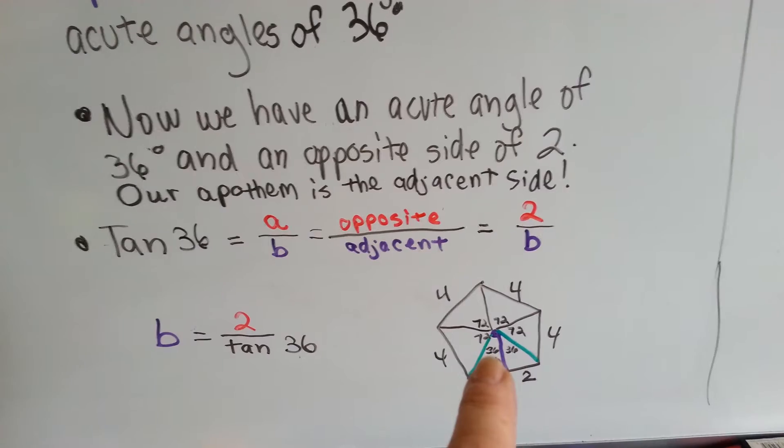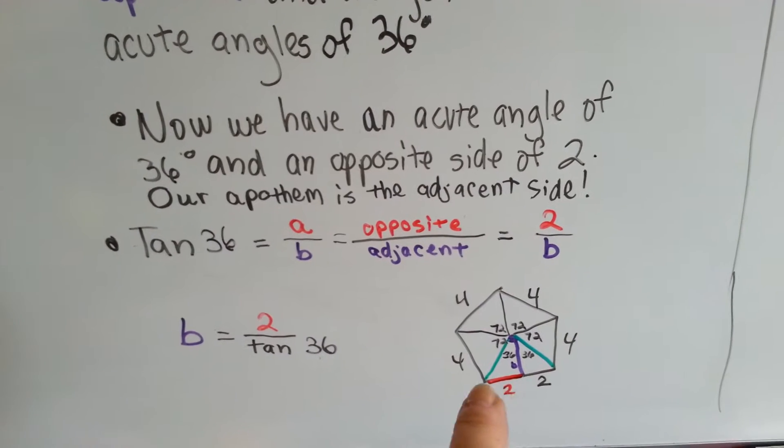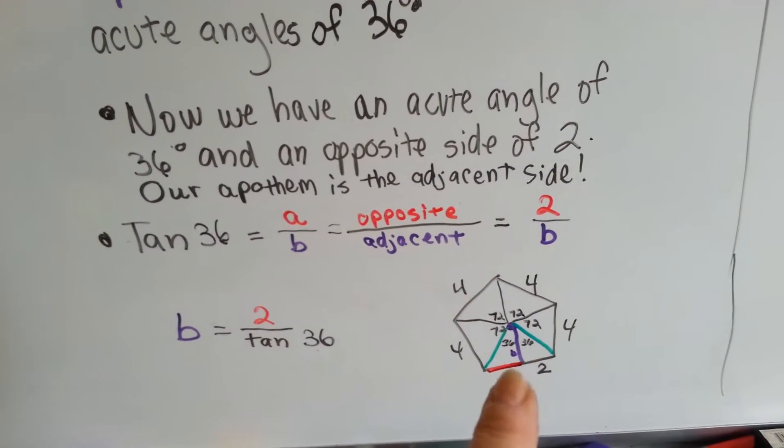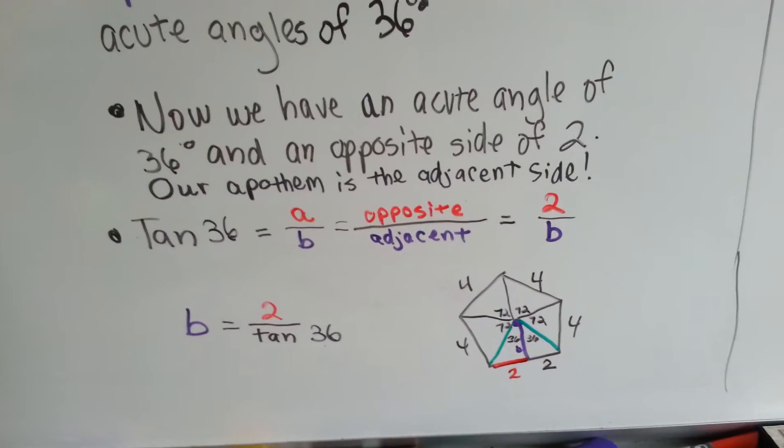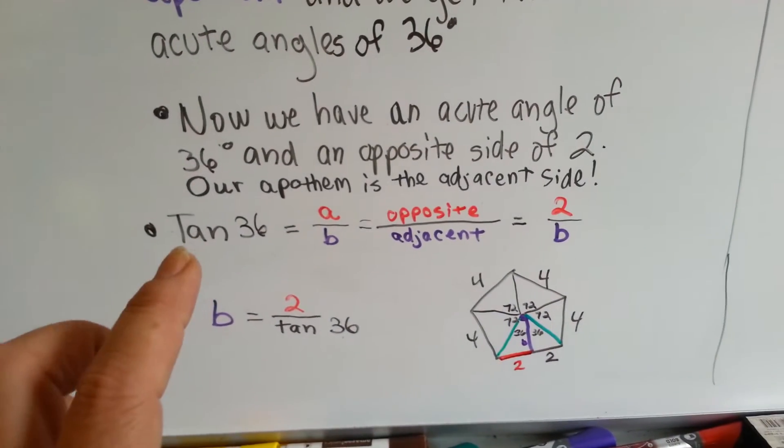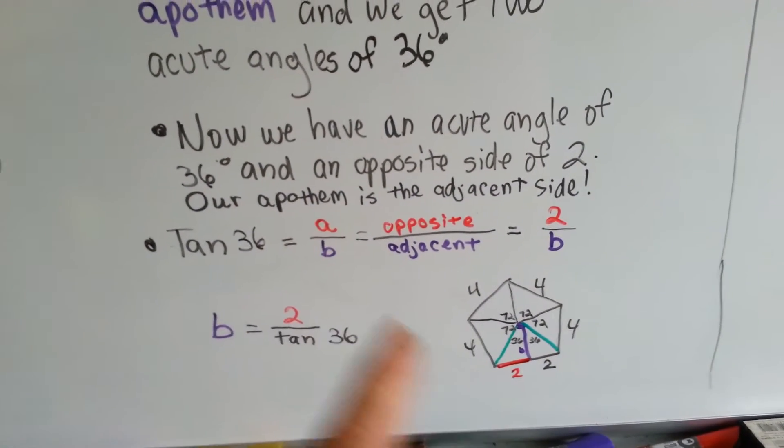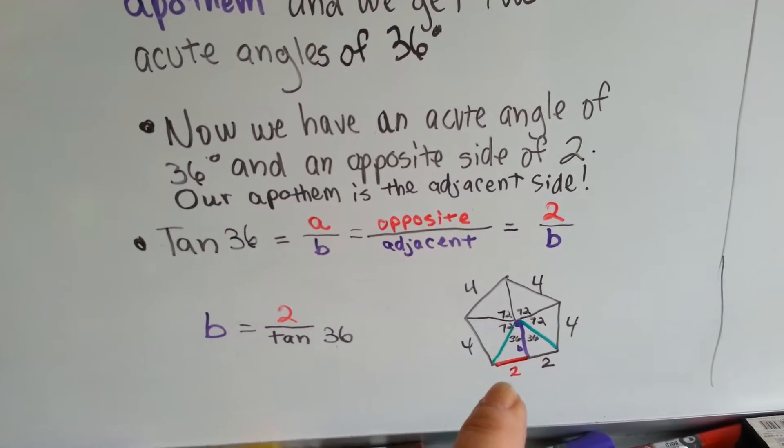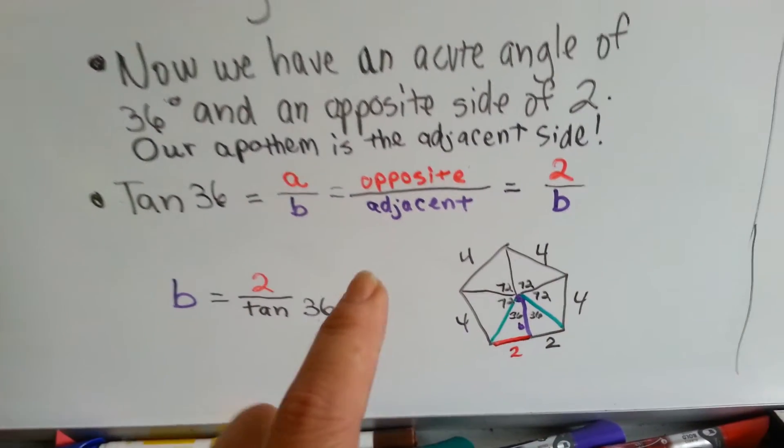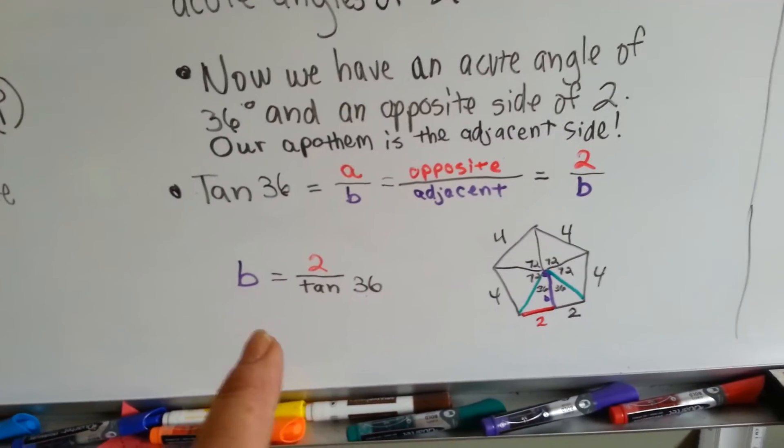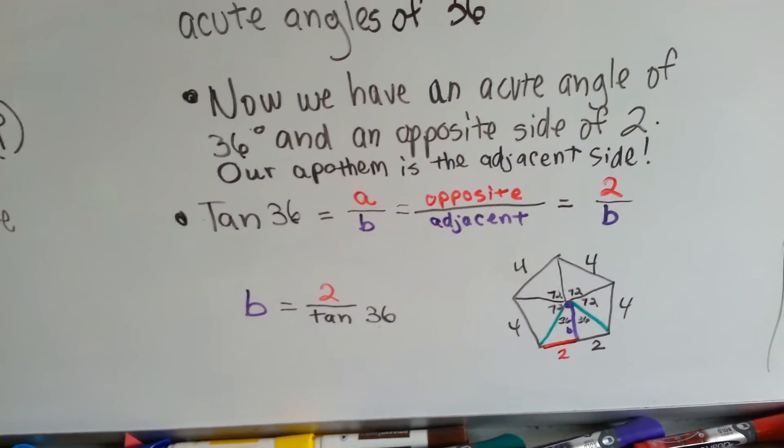Now, because we get this 36 degree angle in this particular one, we now have an acute angle of 36 degrees and an opposite side of 2. Because if these are each four, when we broke this triangle in half, this side became 2 and this side became 2. So, what we're going to do is a tangent ratio, which is tangent 36, which is the 36 degrees, is equal to A over B. And I've color-coded them. It's the opposite side over the adjacent side. So, it's going to be 2 over B because we don't know what the measure of the apothem is, it's just B. It's the opposite over the adjacent. So, we rewrite the formula, the equation, to help solve it. So, B is equal to 2 over tangent 36.